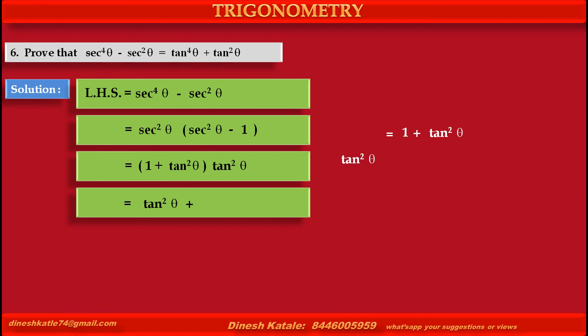So multiplying the bracket, the first term becomes 1 into tan squared theta, that is tan squared theta, plus the second term becomes tan squared theta into tan squared theta, tan raised to 4 theta.